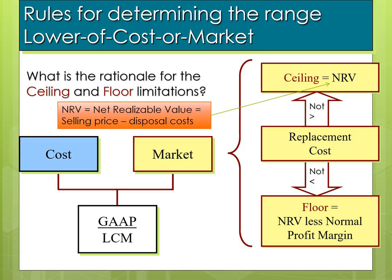We'll go through some examples of this. This representation gives you a nice view of what it looks like. What we're trying to do is go one step further when we try to figure out what is market. We have to go through that process first before we can compare it to what we paid for it, because we're going to look at market versus cost and whichever is lower is what we're going to value it at. To come up with market, we look at the replacement cost and ask: does it fall within the range — i.e., the ceiling, which is the selling price minus disposal cost — or is it lower than the floor, which is the net realizable value less normal profit margin?